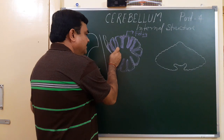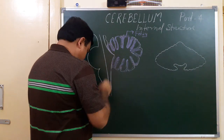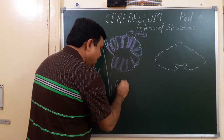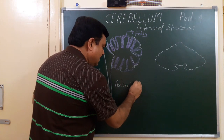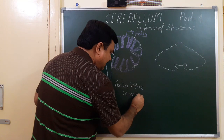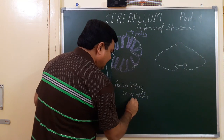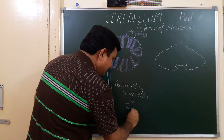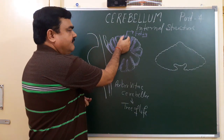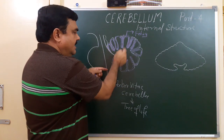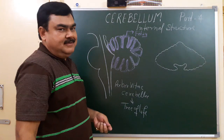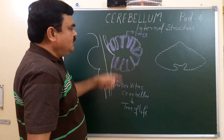This branching pattern is known as arbor vitae cerebellum, meaning 'tree of life.' Here, this is folia, and the tree of life appearance is known as arbor vitae, the tree of life.